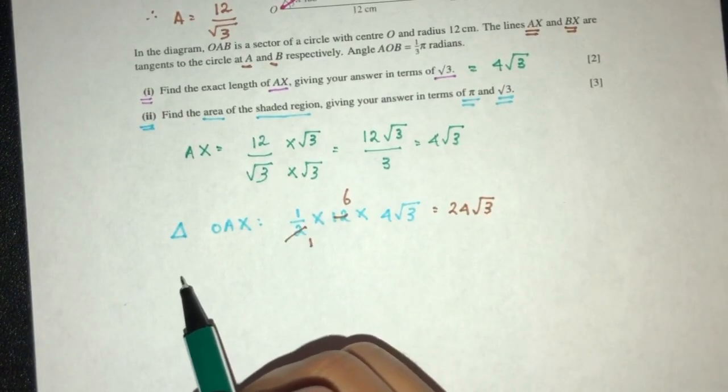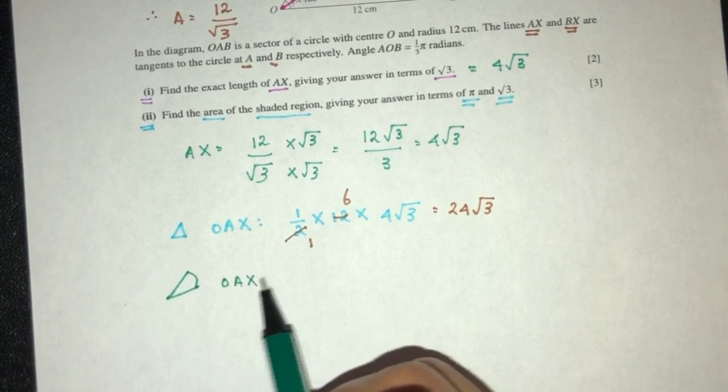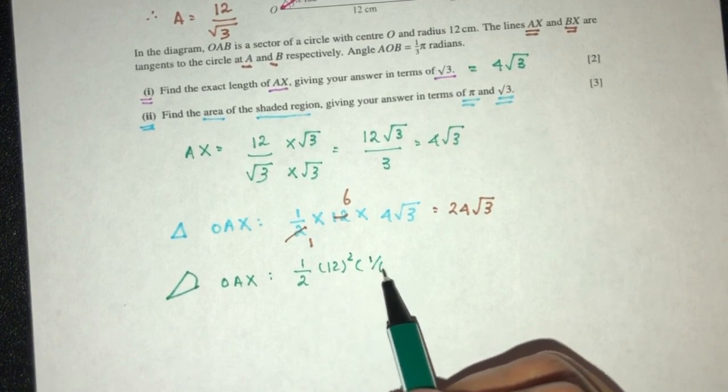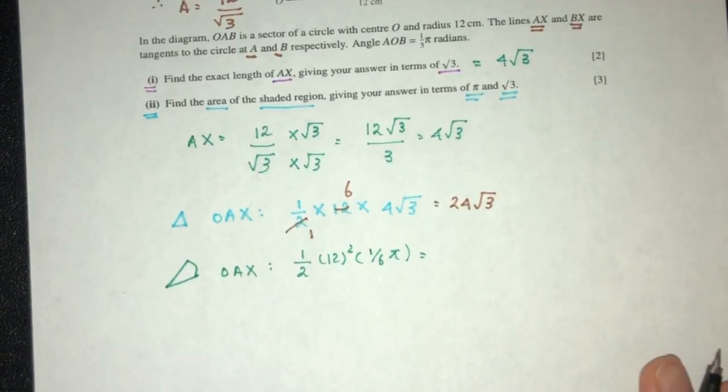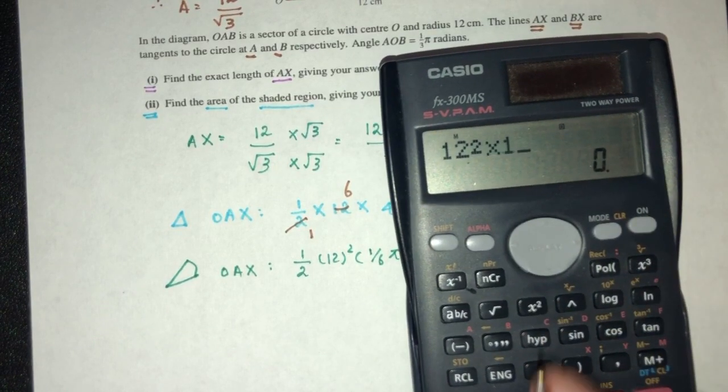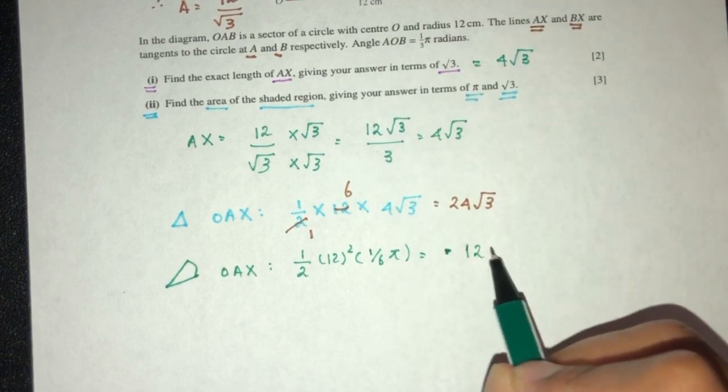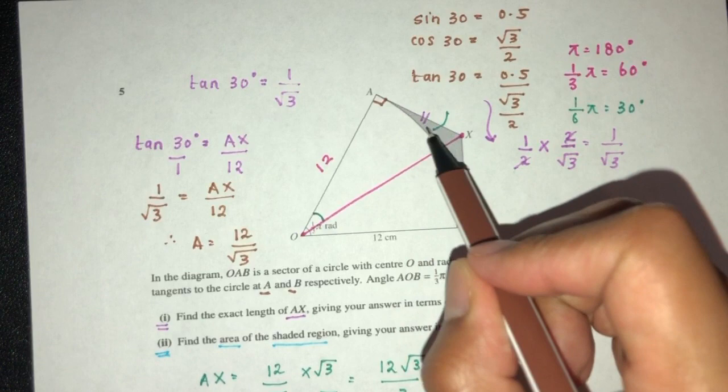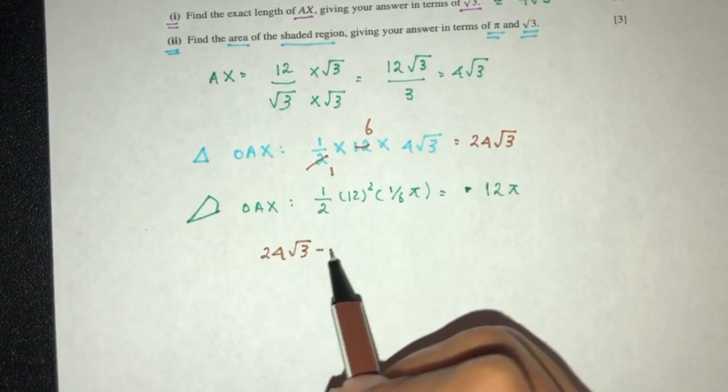I can remove this value over here so I only have this one. Minus the area of the sector OAX. That will be 1/2 r squared, which is 12 squared, theta the angle is 1/6 π. If you want to use the formula, you have to use radians. So 12 squared times 1/2 times 1/6, you will have 12π. Now here we are only trying to find this area, just this one. That will be 24√3 minus 12π.